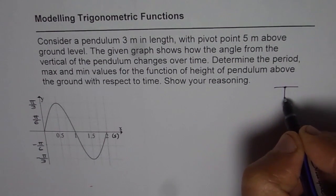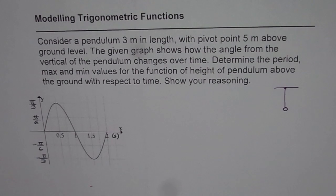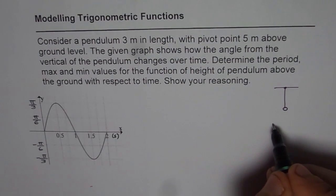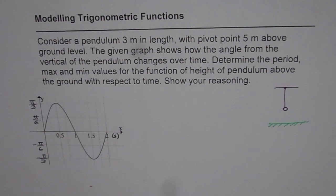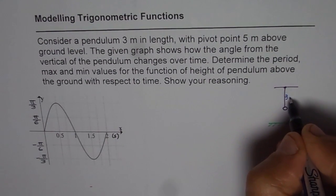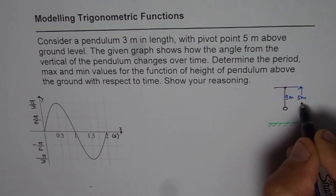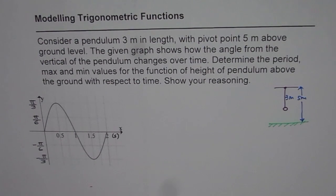So let's say we have a pendulum which is three meters in length, but this height is from the ground five meters. So approximately let's say that's the ground for us. So what we have here is three meters is this and five meters is that height. That's the position given to us.